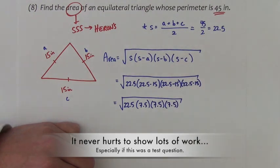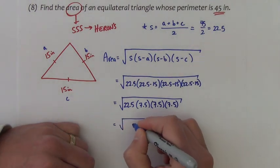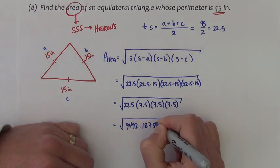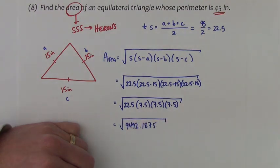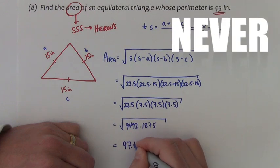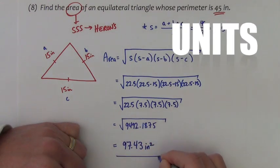And now I'm just going to multiply all that together. And that comes out to be 9492.1875. I'm going to take the square root of that number. And I get 97 point, we'll use two decimal points, 43 square inches.